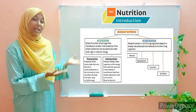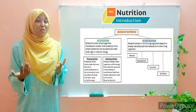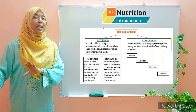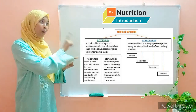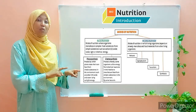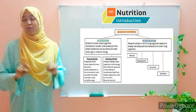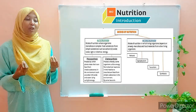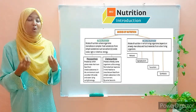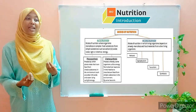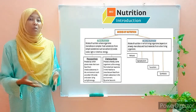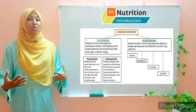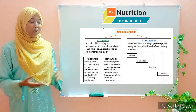Moving on to heterotrophism. Organisms that don't have the ability to manufacture their own food fall under this mode of nutrition. Heterotrophism is for those organisms that cannot manufacture their own food. We fall under this category — we either feed on plants or other animals, so we feed on other organisms and are therefore heterotrophs.